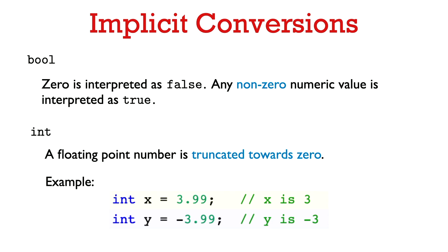Let's talk about these implicit conversions. So implicit conversions with respect to a Boolean. Assigning the Boolean any numeric value will be implicitly converted to true or false. And zero is interpreted as false. And any non-zero numeric value is interpreted as true. So with an int, a floating point number, if you try to assign an int a floating point number, then that floating point number is going to be converted to an int by truncating towards zero. So for example, if you say int x equals 3.99, that's going to initialize x to be 3. So we just completely drop the part after the decimal point and end up with 3. And if we say int y equals negative 3.99, again, we drop the part after the decimal point and y will be initialized to be negative 3. So this is called truncation towards zero.